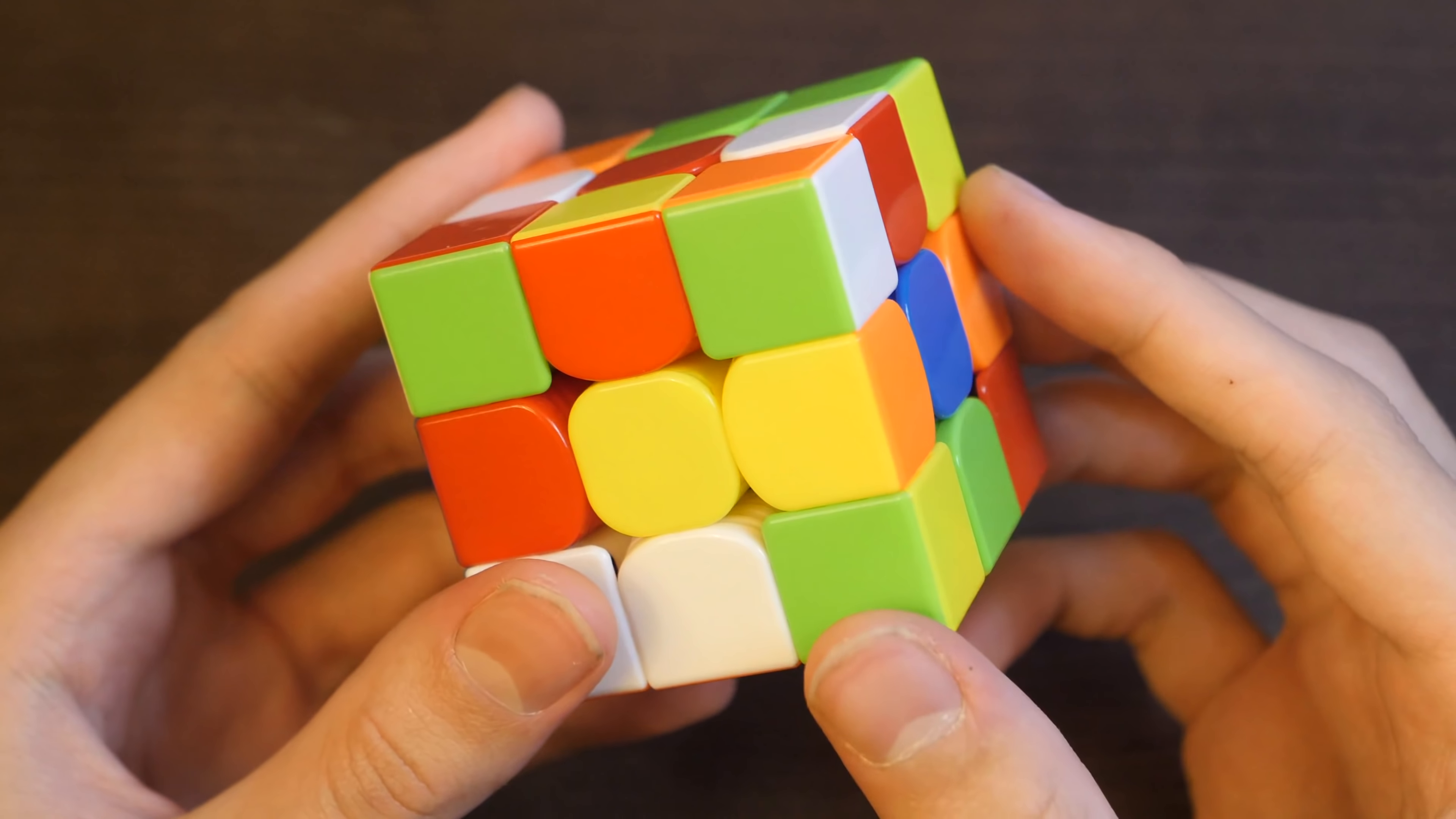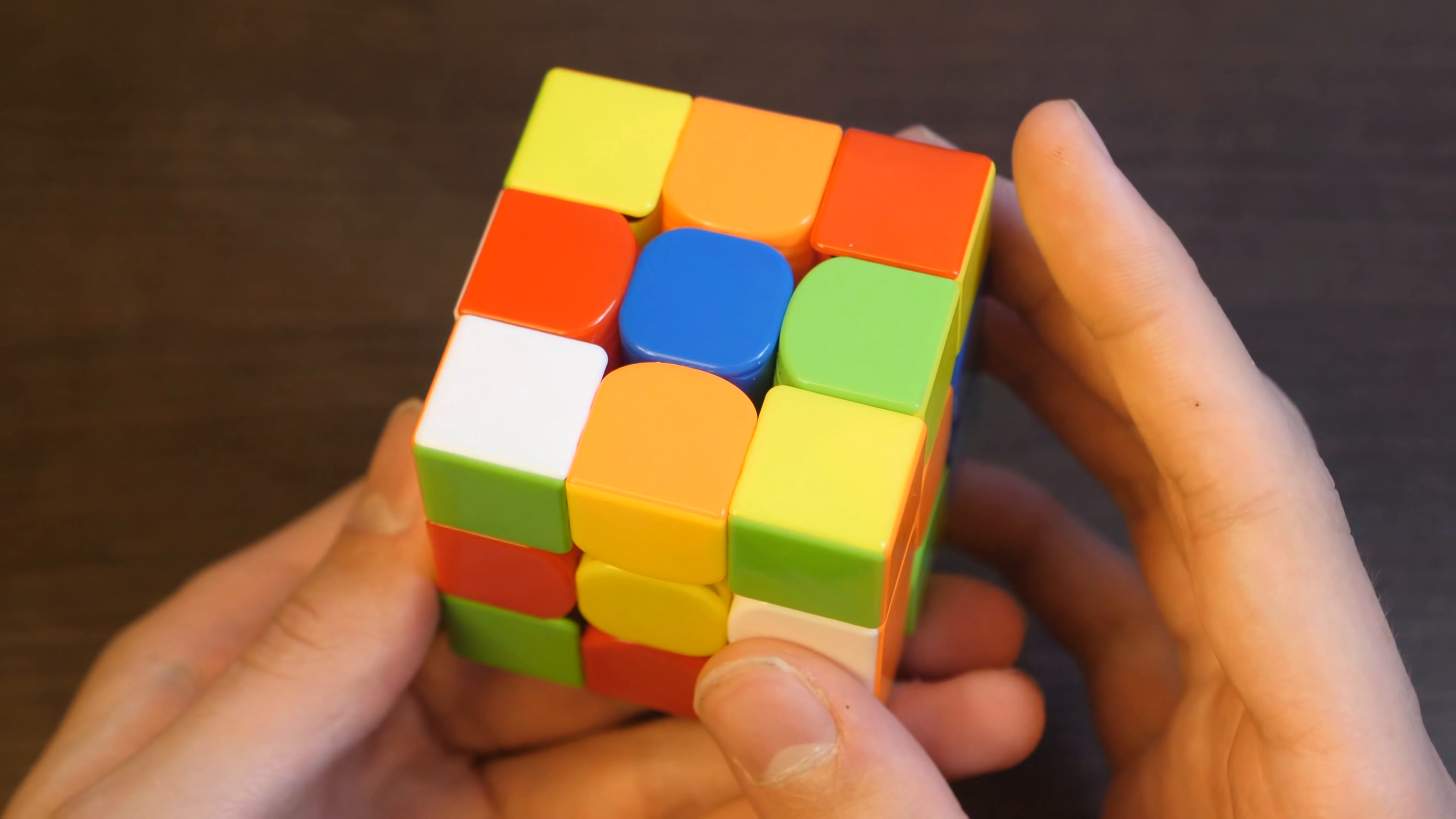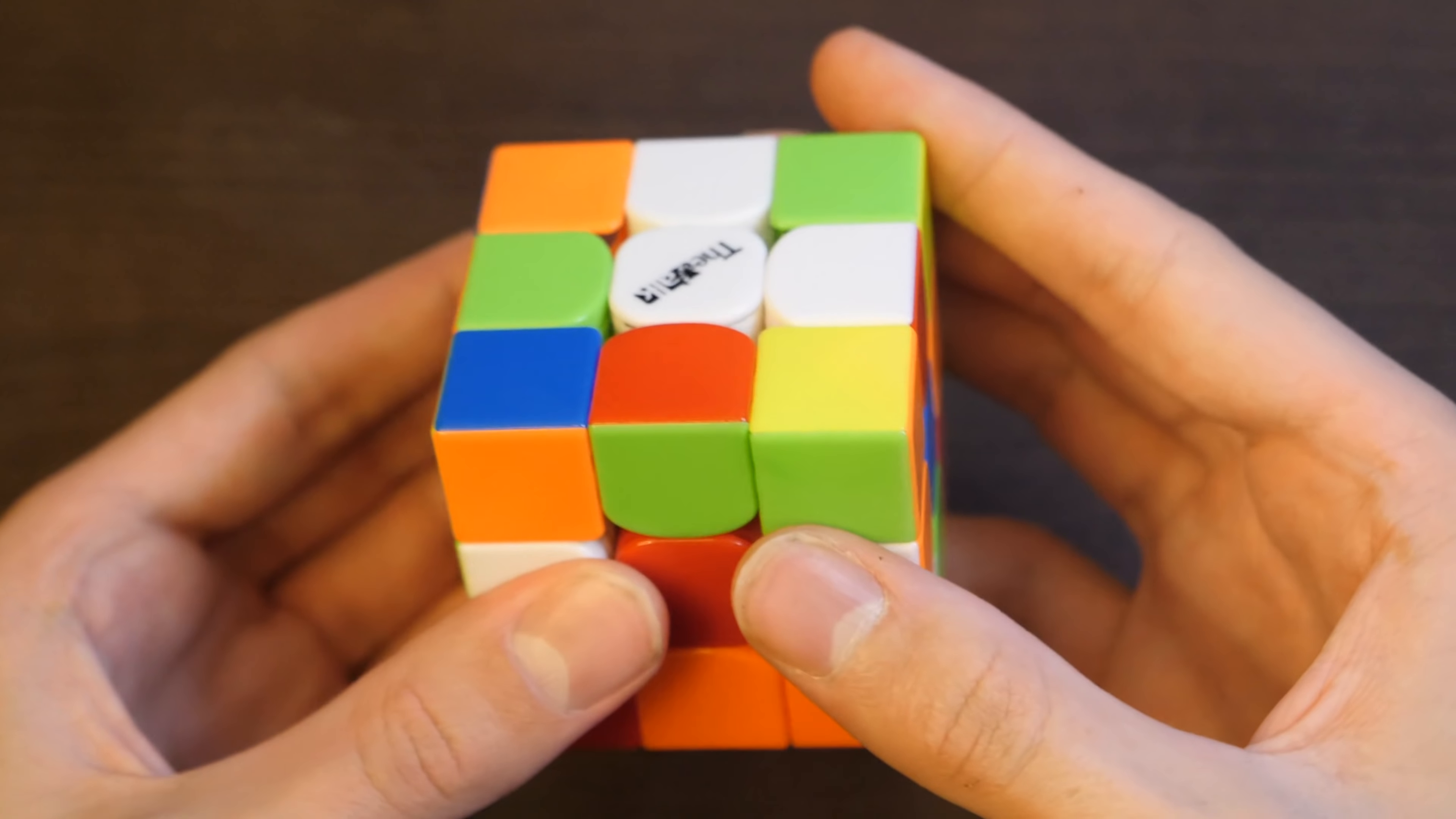For the fourth solve, Patrick did a yellow cross. His cross pieces are here, here, here, and here, and his free F2L pair is right here. So he's going to solve his cross while preserving this pair, just like this, solving these three relative to each other, then making space for this one with a D prime, and then solving the cross.